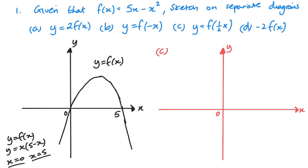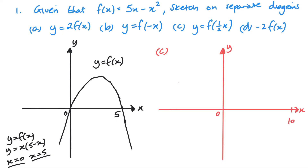Part c is also affecting the x values, and we've got a half x. So this is the same as dividing all my x values by a half, which is the same as multiplying all my x values by 2. So I'm going to be between 0 and now between 0 and 10. The graph looks very much the same — it's just a bit wider, same height, same y values, but it goes between 0 and 10.